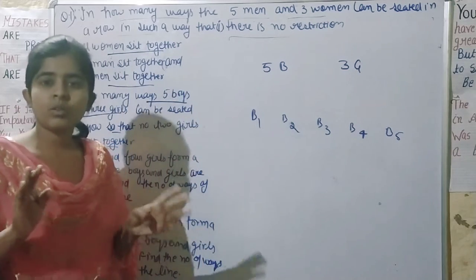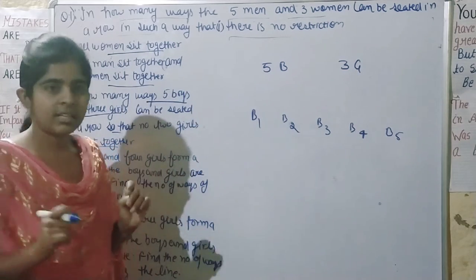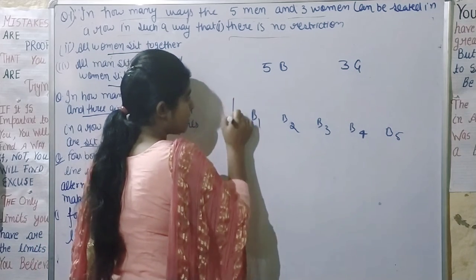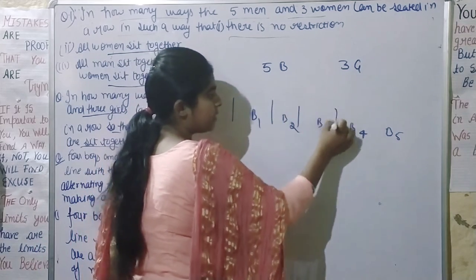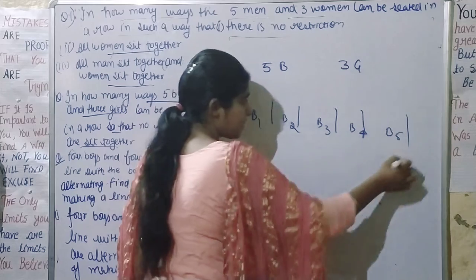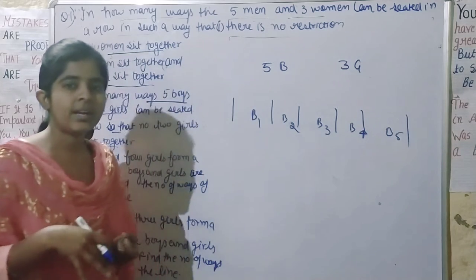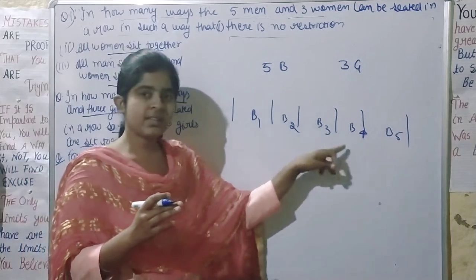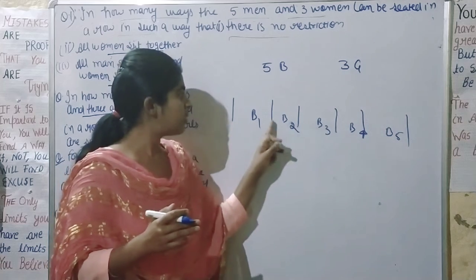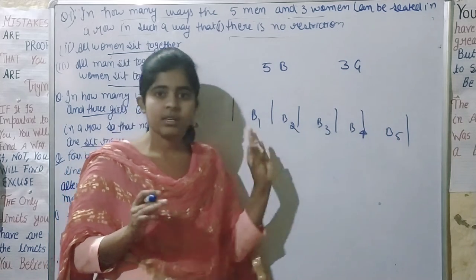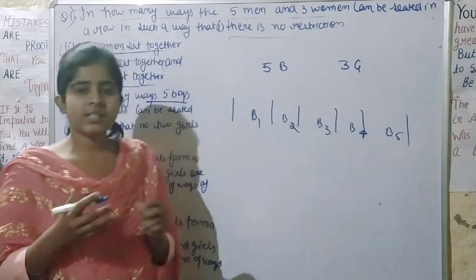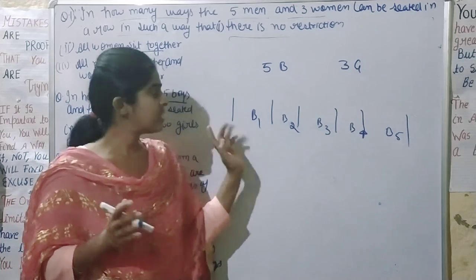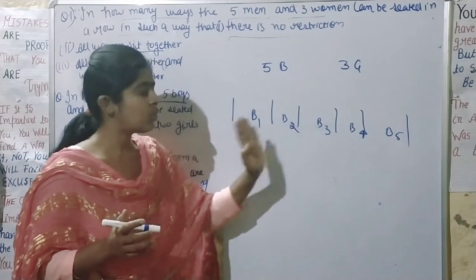First step: you arrange the boys. If you try to put girls in adjacent positions, they will be together and violate the condition. So we identify the 6 available gap positions around and between the 5 boys — 6 places where girls can sit so no two girls are adjacent.